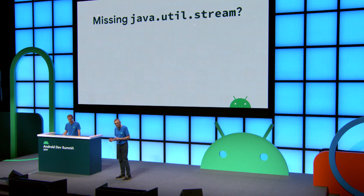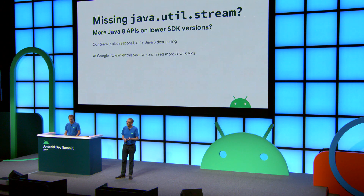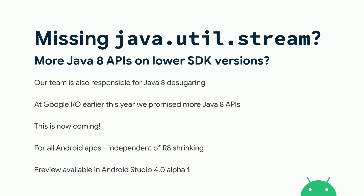Now for something completely different: are you missing the Java 8 APIs and Java util streams on Android? Are you interested in using more Java 8 APIs on lower SDK versions? Many developers have asked, and at Google I/O earlier this year we promised to work on this. Our team is not only responsible for shrinking but also for Java 8 desugaring, and we've been working on this. I'm happy to announce that a preview is available in Android Studio 4 Alpha 1, which was released yesterday.